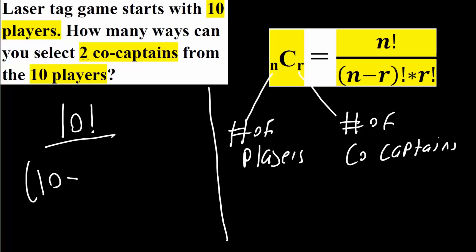R is 2, the number of co-captains that we are selecting. We have a factorial here, times r again. So 2 factorial.